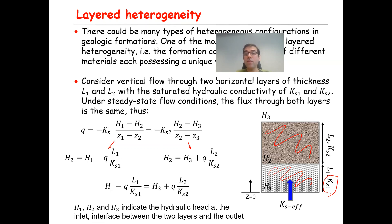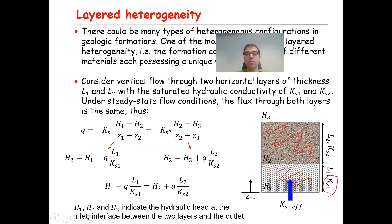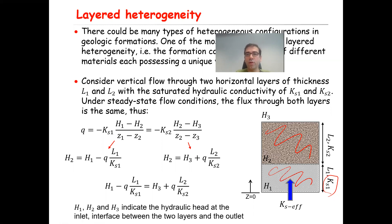Case one is vertical flow, where the direction of flow is perpendicular to the layering structure, and the other is horizontal flow. Consider vertical flow through two horizontal layers of thickness L1 and L2 with saturated hydraulic conductivity Ks1 and Ks2. Under steady-state flow conditions, the flux through both layers is the same because of conservation of mass or the continuity equation.